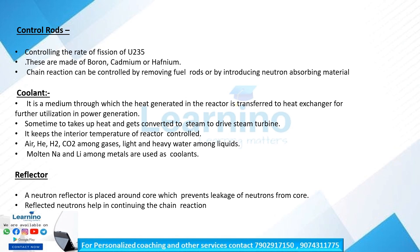A neutron reflector is placed around the core, which prevents leakage of neutrons from the core. The reflected neutrons continue the chain reaction. This is how we use the reflector — to keep neutrons within the core and sustain the chain reaction.